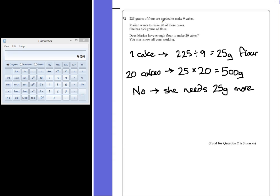You could have also mentioned that she has enough for 19 cakes, or she is missing 25 grams. But do include a reason for why you've said no.